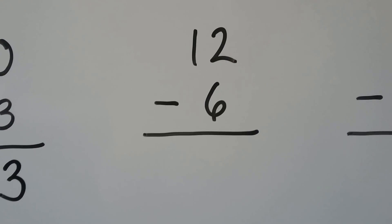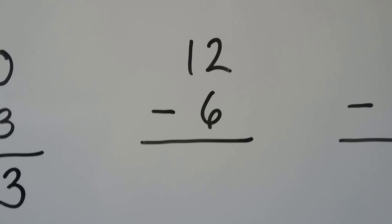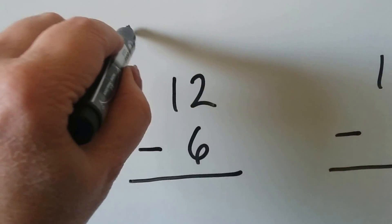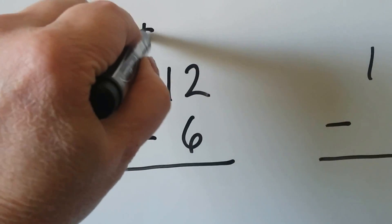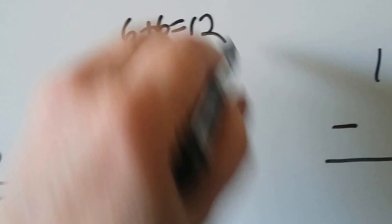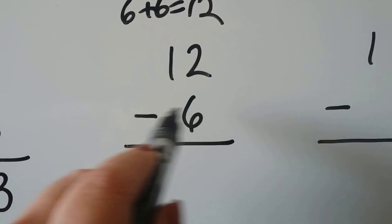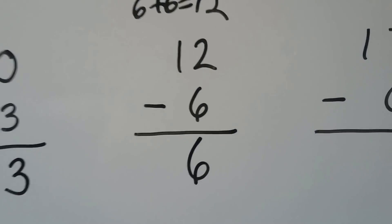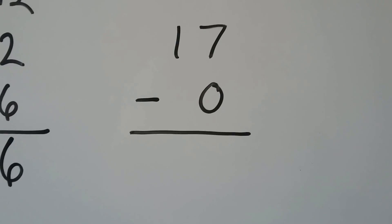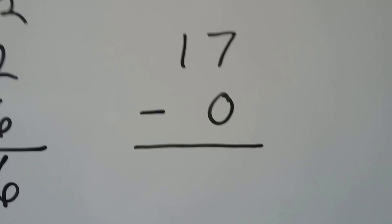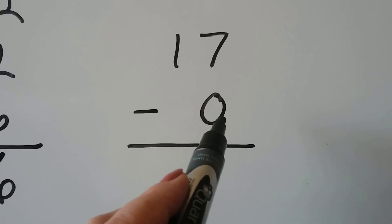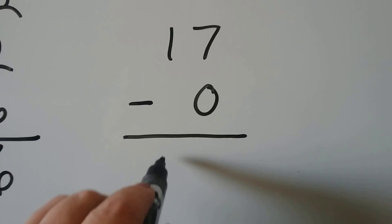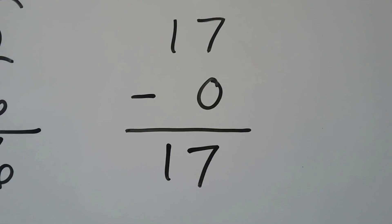12 minus 6. We can use doubles or a related addition fact. If we know that 6 plus 6 is equal to 12, then we know that 12 minus 6 is equal to 6. 17 minus 0 — we know that when we subtract 0, the number stays the same, so it's still 17.